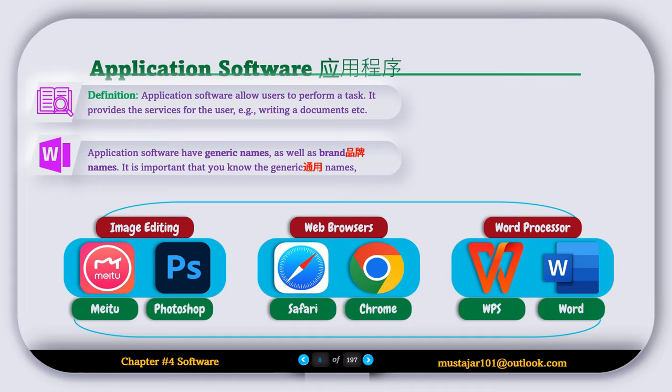We also have word processors, for example WPS and Word, both used to write documents. The generic names are image editing software, web browser, and word processor, while the brand names include Meitu, Photoshop, Safari, Chrome, WPS, and Word.